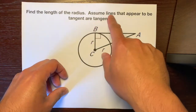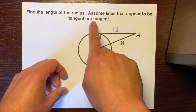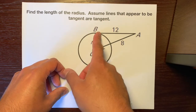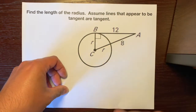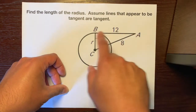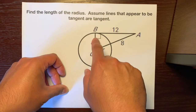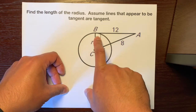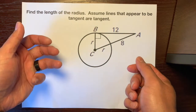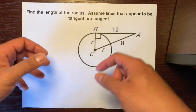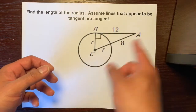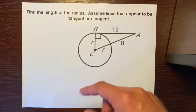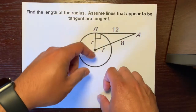Assume lines that appear to be tangent are tangent. So this line is tangent. We don't really have to assume anything, if you know that lines that are tangent that intersect the radius are perpendicular. They already put that 90 degree angle there, so we don't really have to assume much. So if we just look at this, we can know that they're tangent. Let's figure out the length of this radius.